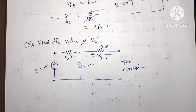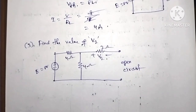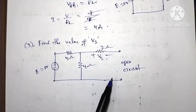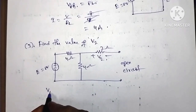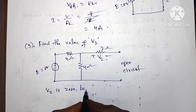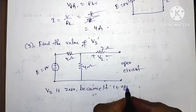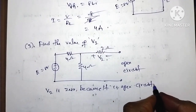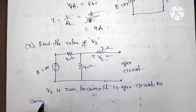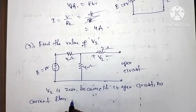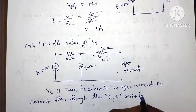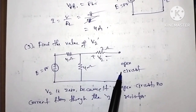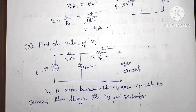Third point: find the value of V2 when R equals infinity, which means open circuit. V2 is 0, because it is an open circuit — no current flows through the 2-ohm resistor. Since no current flows, the voltage V2 across it is 0.